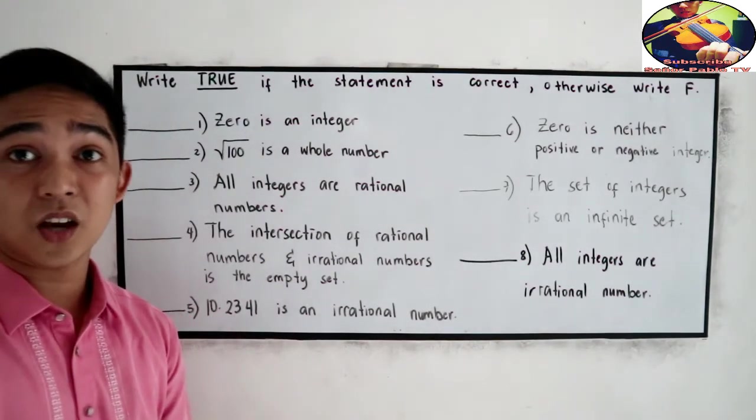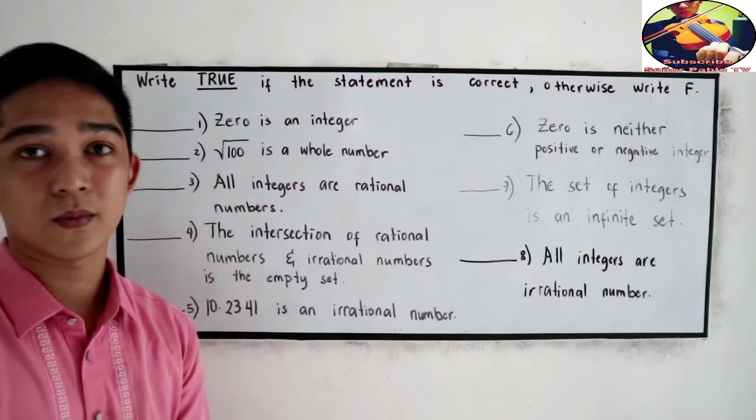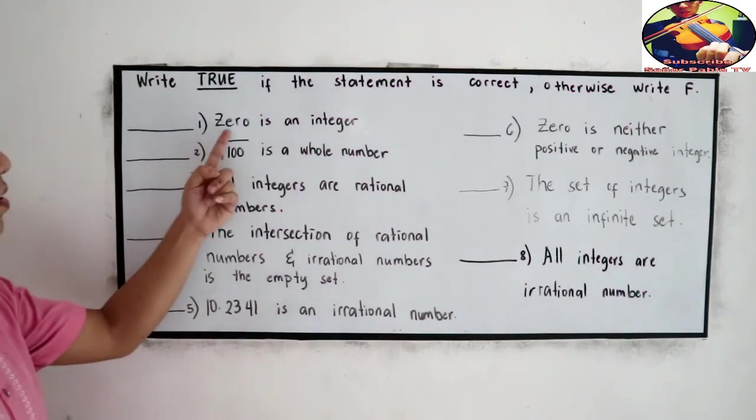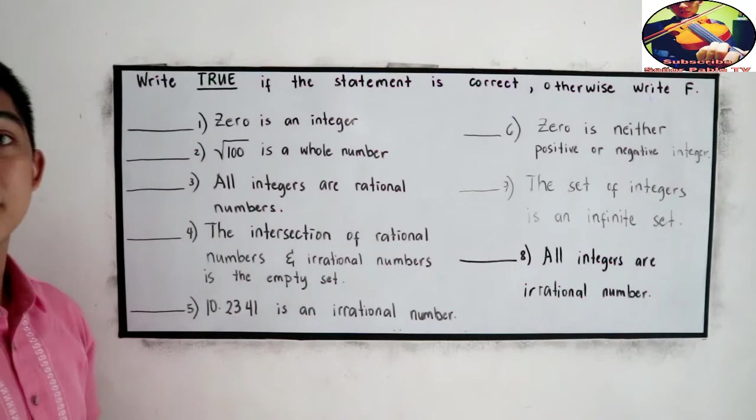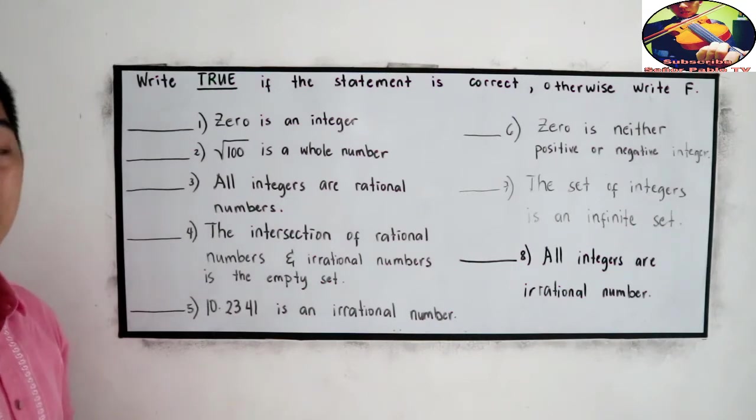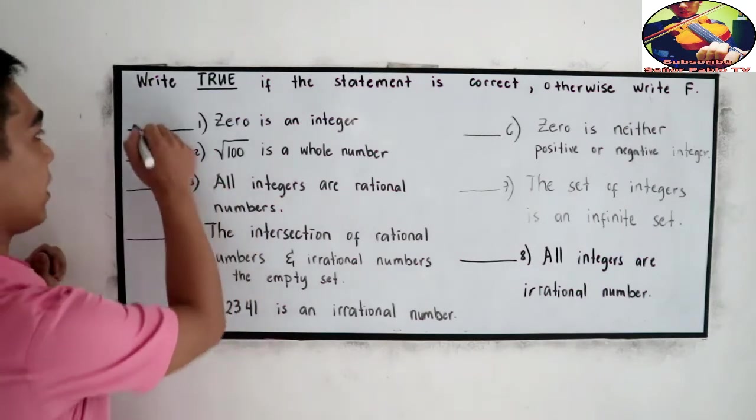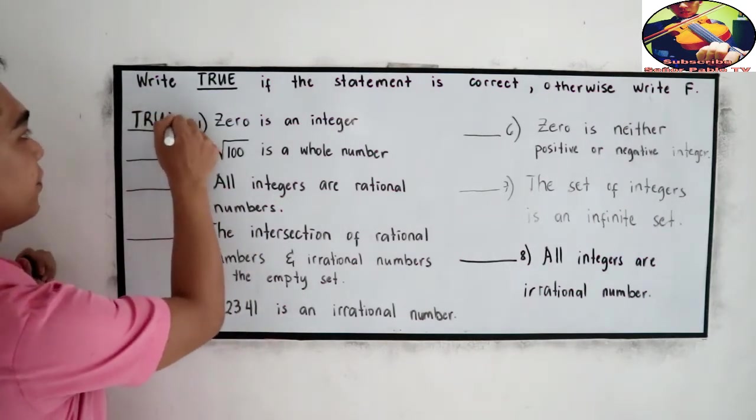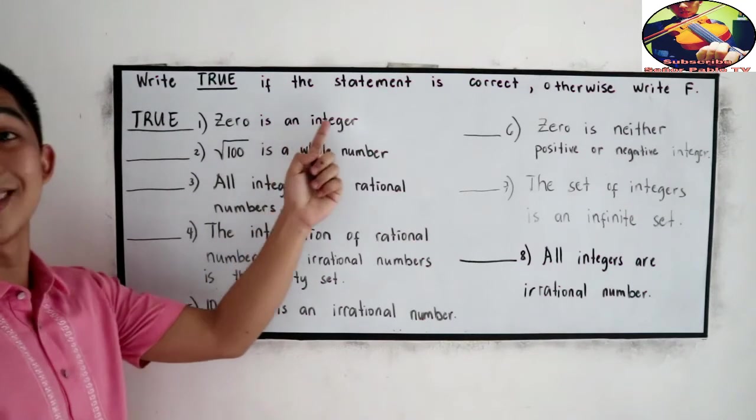And now, let's check your answers. Number 1, zero is an integer. True or F? The answer is true. Yes, zero is an integer.